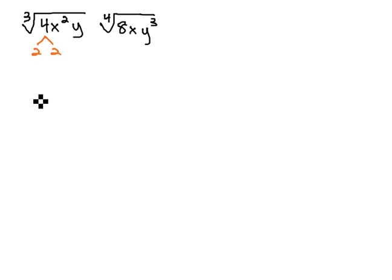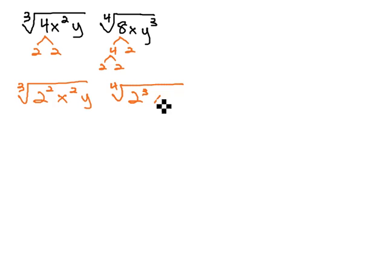4 is 2 times 2, so this can be rewritten as the cube root of 2 squared x squared y. The 8 factors to 4 times 2 and the 4 to 2 times 2, so under the 4th root, we've got 2 to the 3rd power x y to the 3rd power. Now we can look and see a common index on both of these and use the exponents we have just found on the 2's.